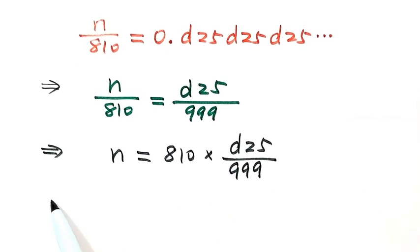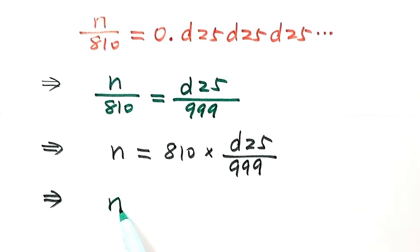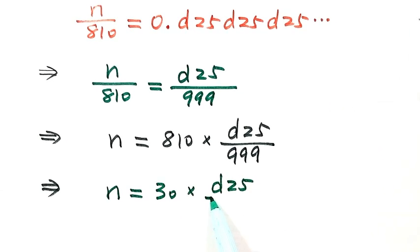Then cancel the common factor. Then n equals 30 times d25 over 37.